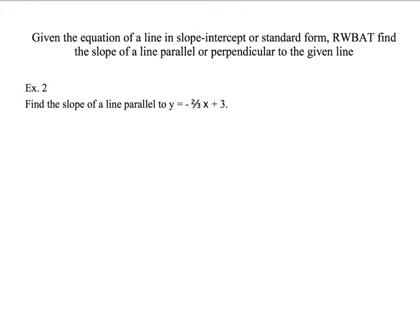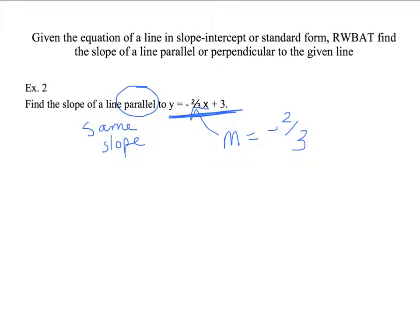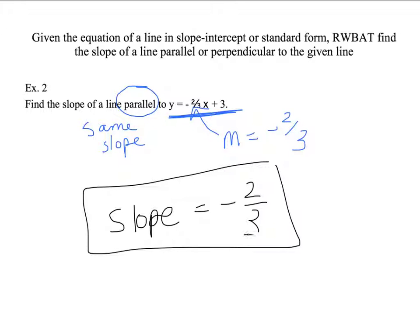Example 2: take a moment to read it to yourself. Let's annotate the question. The key word is parallel, which means same slope as this line. The slope I read as negative 2 thirds, which means if I want a line with the same slope, the slope I want is negative 2 over 3.